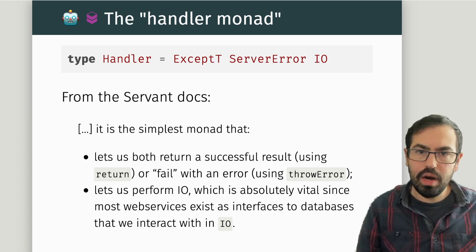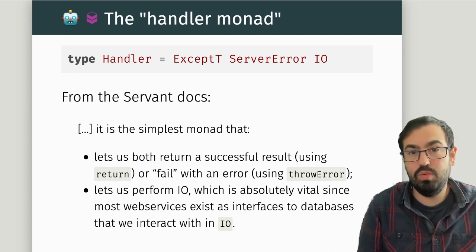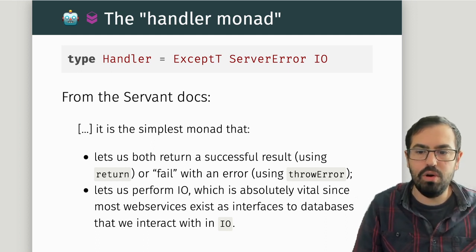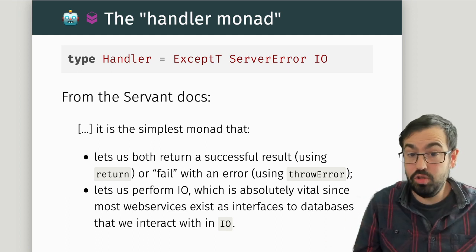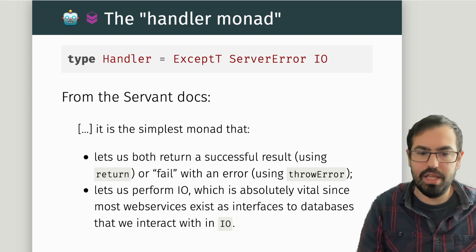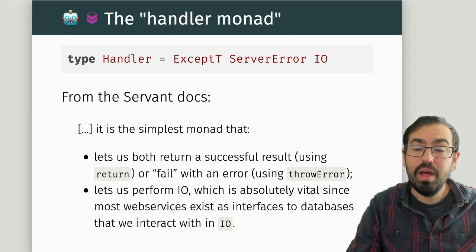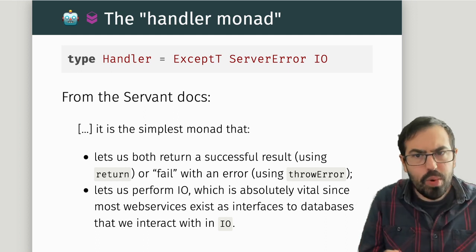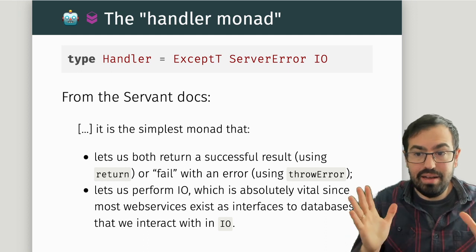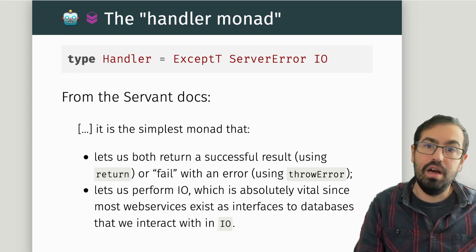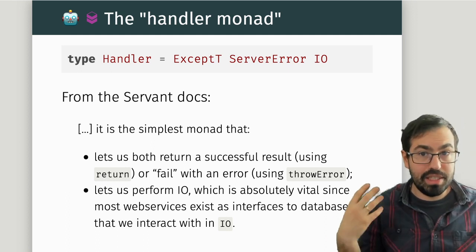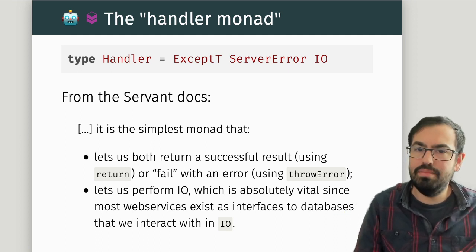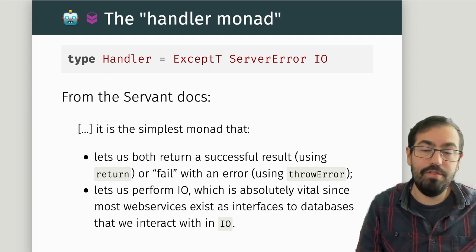The Servant docs give a good notion of why to use the Handler and not a more complicated idea. You want the simplest monad that allows you to return successfully or fail — returning a 404, an internal error — which needs some kind of throwError, given by ExceptT of ServerError. Being very practical, in most services you want to query a database, so you need IO. Servant developers decided to go with the simplest monad possible, and Mu took the same approach. It's a very fair assumption.